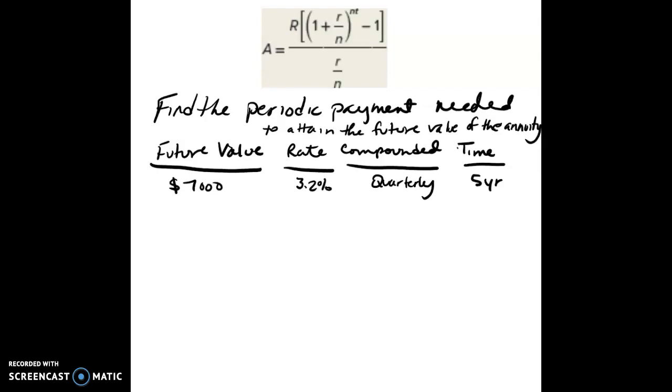All right, and so in this type of problem it says to find the periodic payment needed to attain the future value of the annuity. And here, because it says annuity, again, I pull out the annuity formula. But this time, it's a little different than the typical problems.